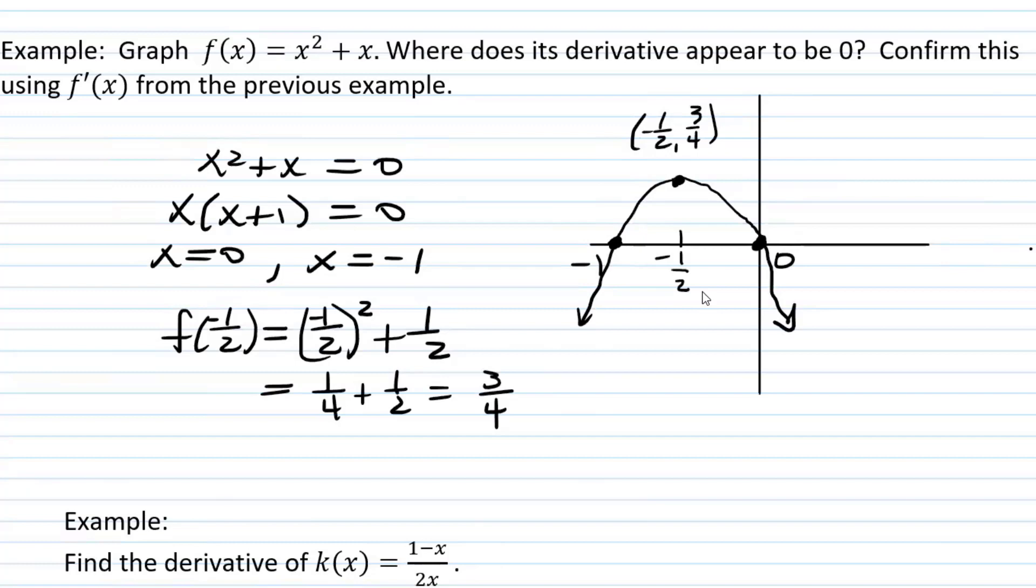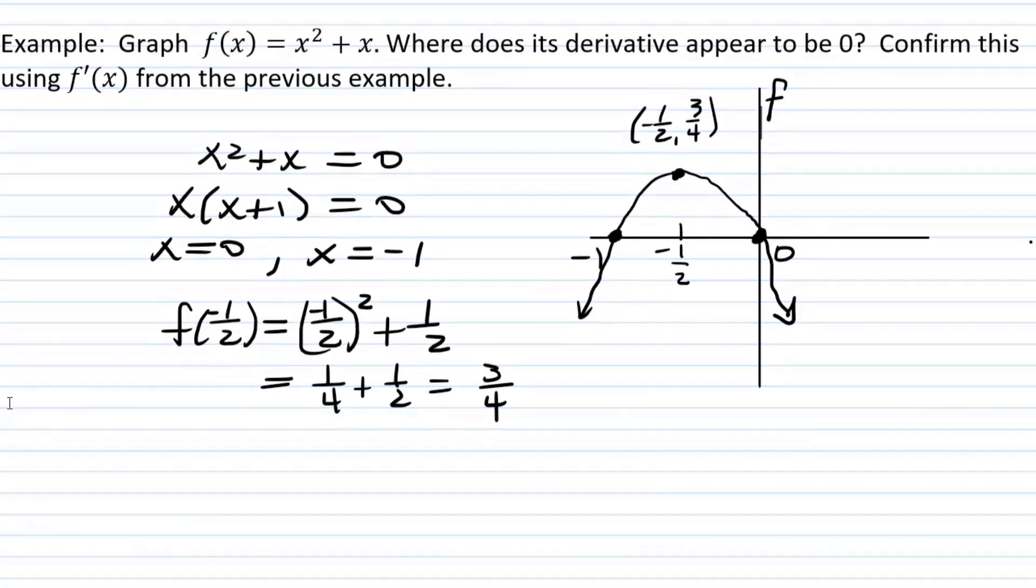So based on this graph, where does the derivative of the function f appear to equal zero? Remember, the derivative is a slope of the tangent line. So you want to picture tangent lines and think about where it would be zero. Armando says negative one half. That's correct. Why? Why did you think that the derivative would be zero at that point? Because we would have a horizontal tangent line. Very good. So this is where the slope would be zero.